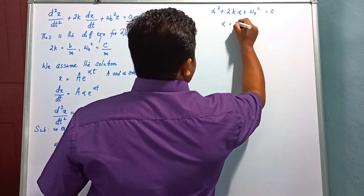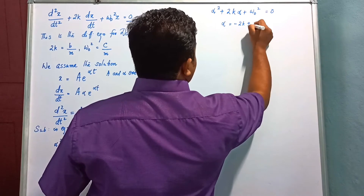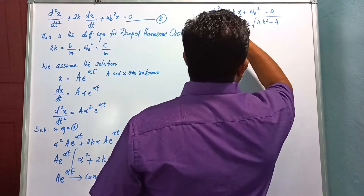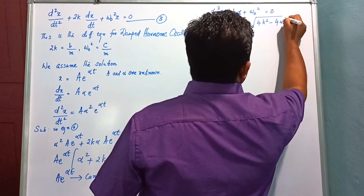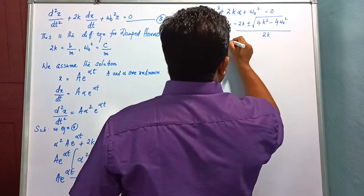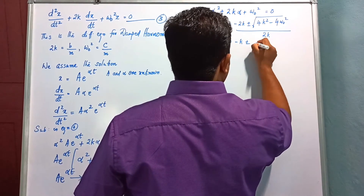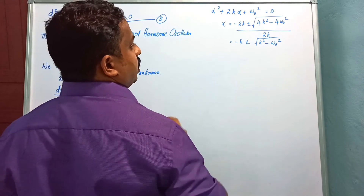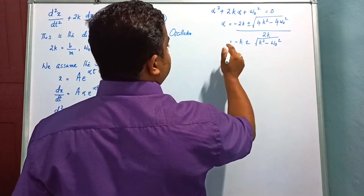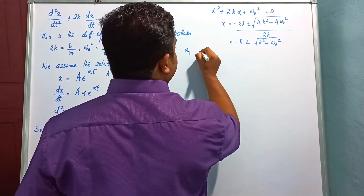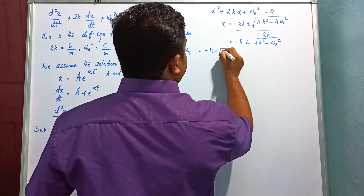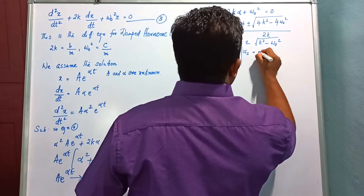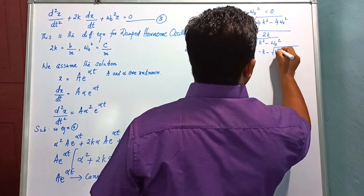Solving the quadratic, α has two values: α₁ = −k + √(k² − ω₀²) and α₂ = −k − √(k² − ω₀²).